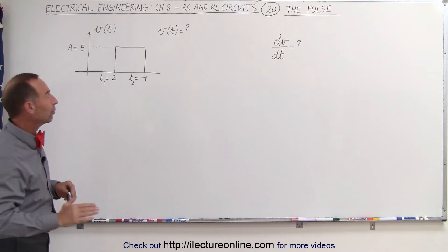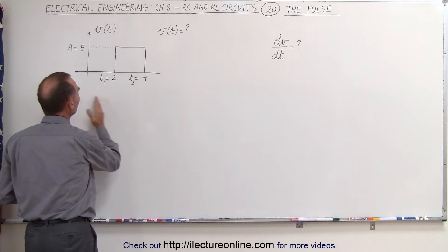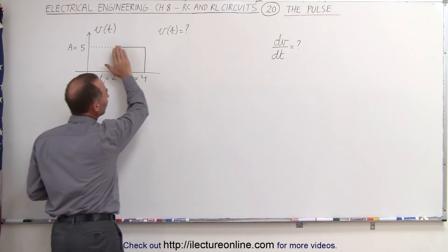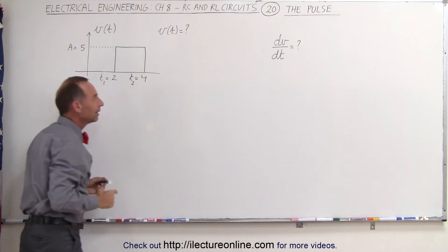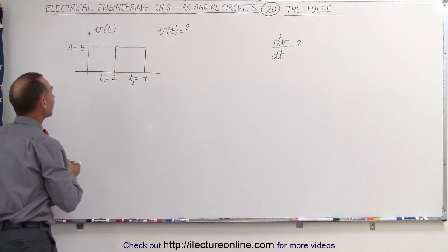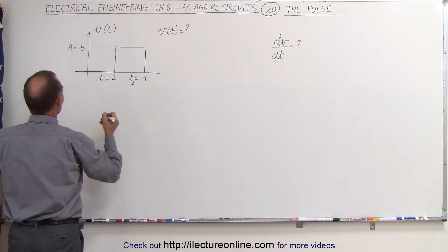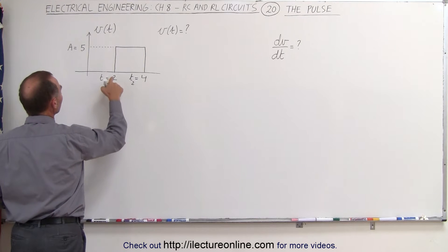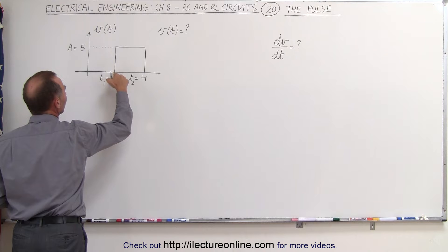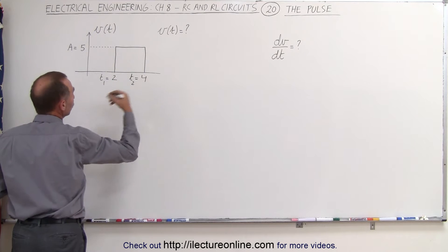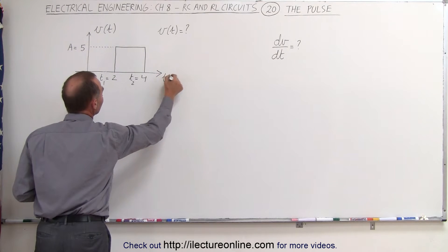Now if we imagine for a moment that the pulse was continuous after two seconds and remained high forever, then we can represent that by that particular unit function. For example, we then say that the unit step function that starts at t equals two, or two seconds, this would be time maybe in seconds.